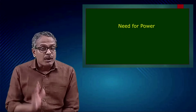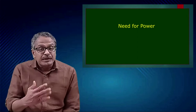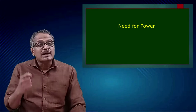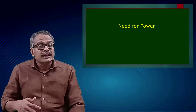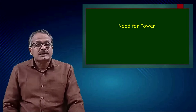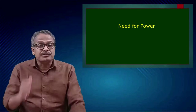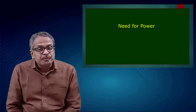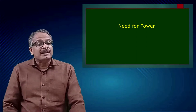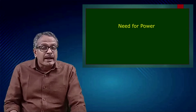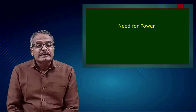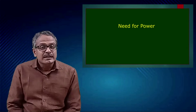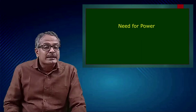The first need is the need for power. Power is the authority and ability of a person to influence others and to get things done through them. Power gives a person some superiority over others. Some persons enjoy this superiority. As far as such persons are concerned, power is the opportunity to dominate, influence, and control others. Need for power is the desire to influence another individual's behavior — the desire to have control over others and to be influential.